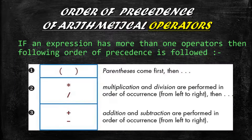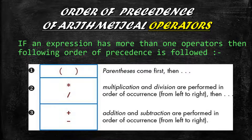Arithmetic operators have an order of precedence. If an expression has more than one operator, the following order is followed — similar to the BODMAS rule. First, whatever is within parentheses or brackets is executed. Then comes multiplication and division, performed from left to right in order of occurrence. Finally, addition and subtraction are performed from left to right. So brackets have the highest priority, then multiplication and division, then addition and subtraction.